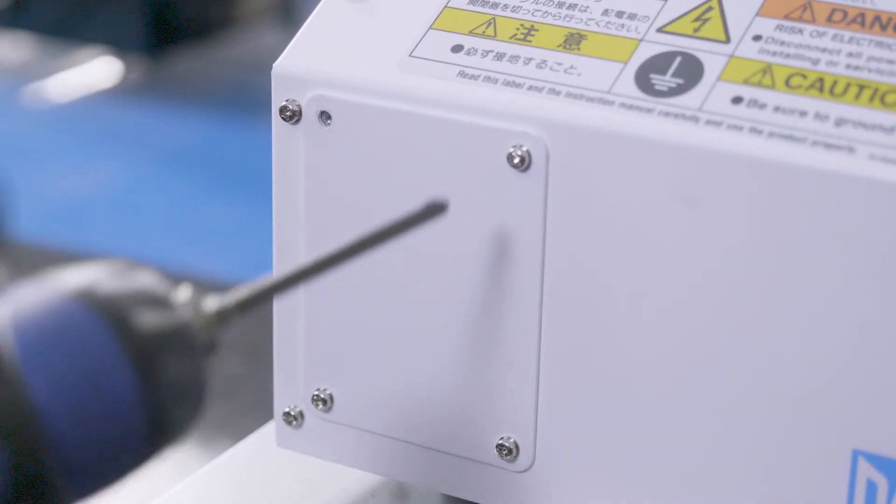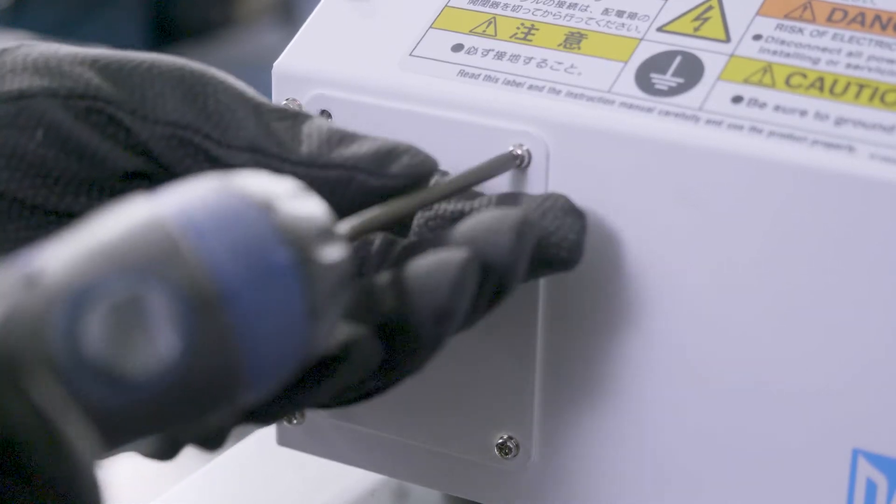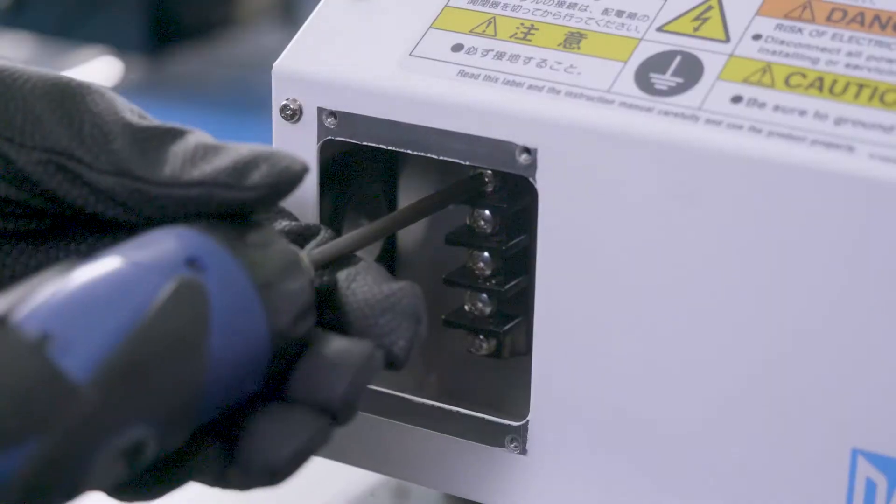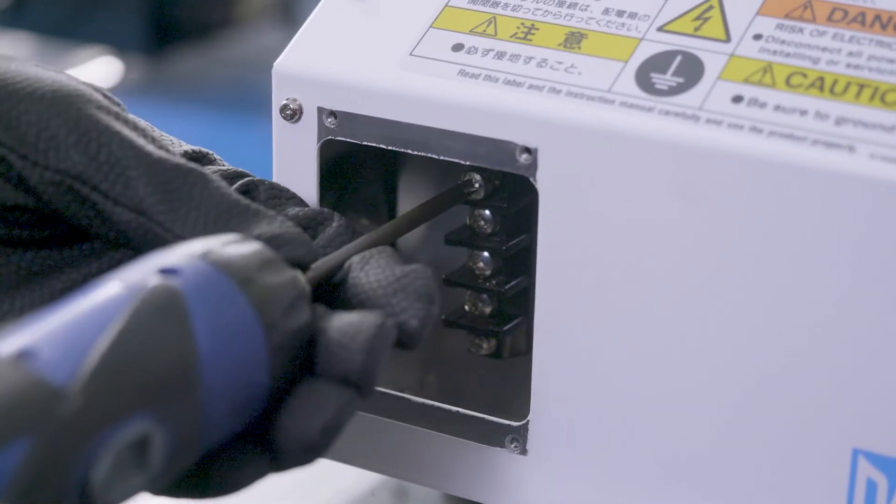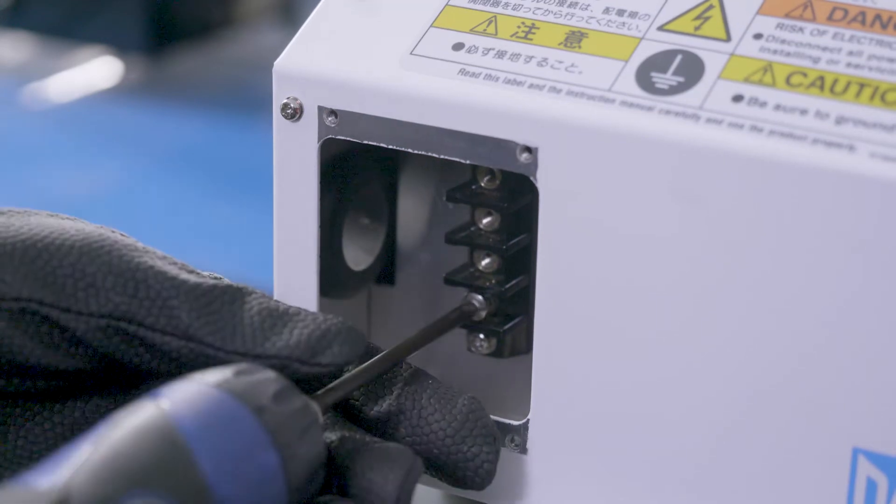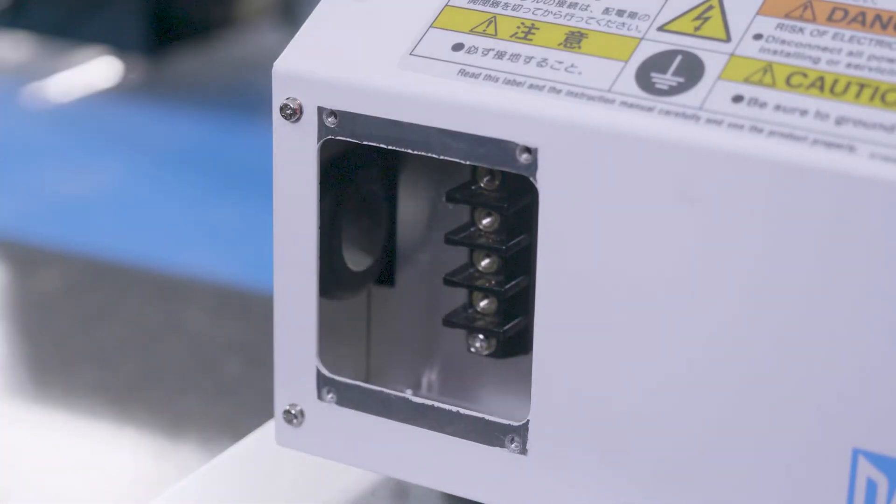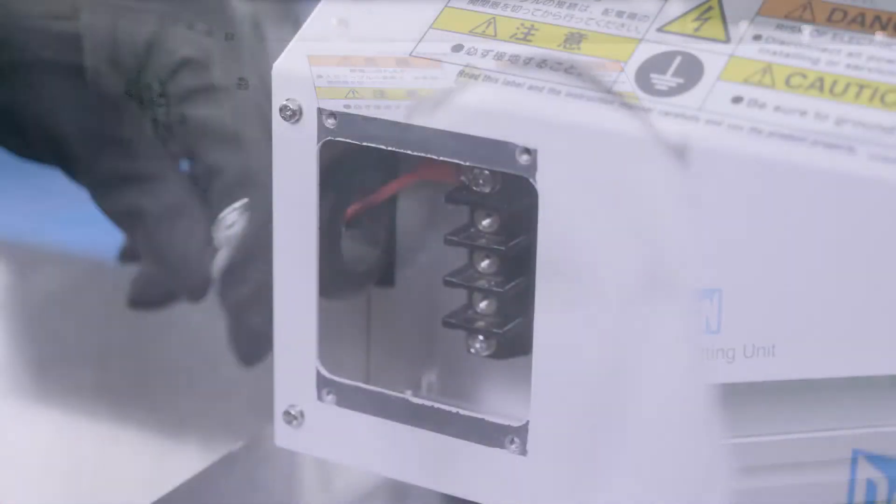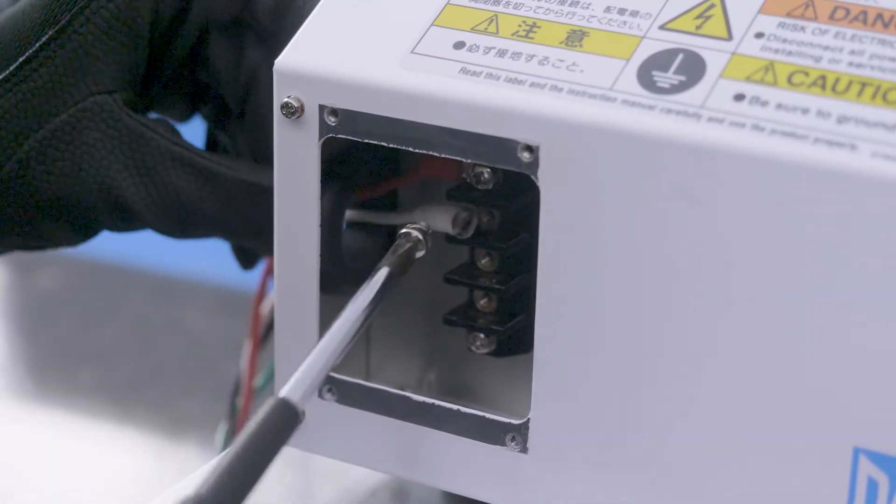Remove the small panel on the side of the power transmitting unit and loosen the cable fixture's ceiling nut. Pass the user supplied input power cable through the ceiling nut and cable fixture and fasten the ceiling nut in place.